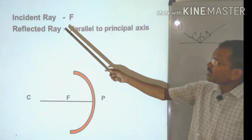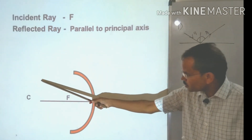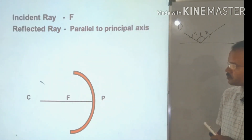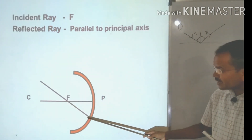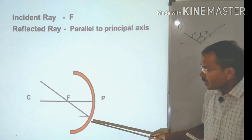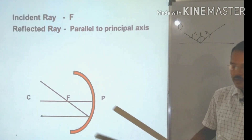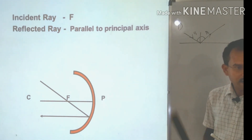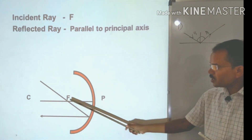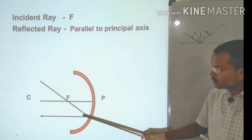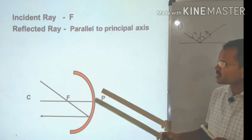Second characteristic: if the incident ray passes through the focal point F, then after reflection it will be parallel to the principal axis. So it comes from F, and the reflected ray goes out parallel to the principal axis.